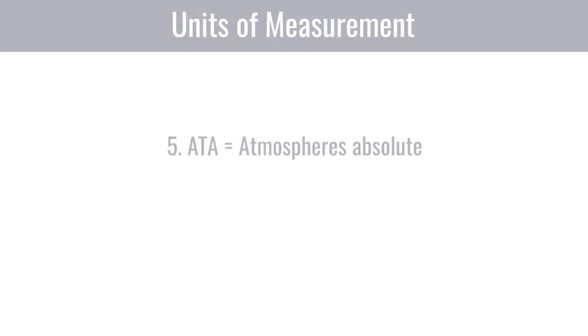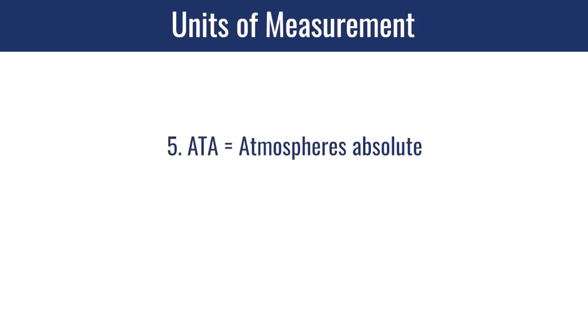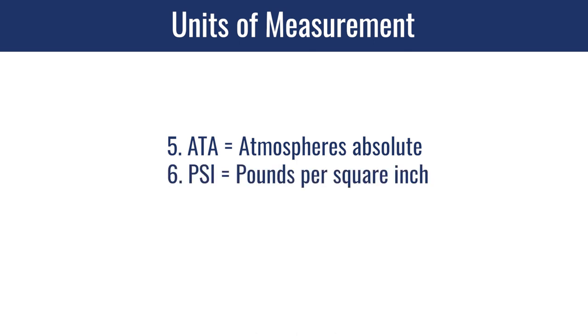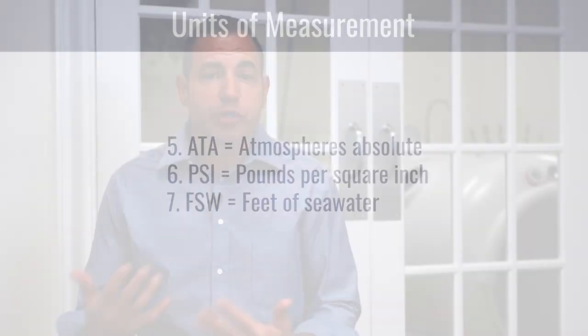Next, there are some units of measurement. This gets very confusing for a lot of people, but to simplify it, we'll talk about the three most common: ATA, which is atmospheres absolute; PSI, which is pounds per square inch; and FSW, which is feet of seawater. We talk about feet of seawater because most hyperbaric history comes from the scuba diving world, and so we talk about depth in terms of feet of seawater.